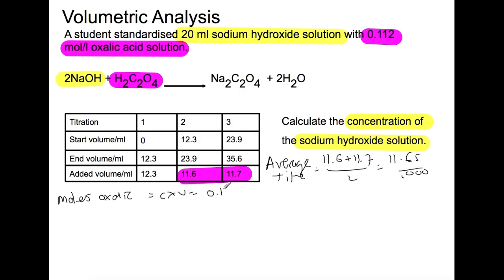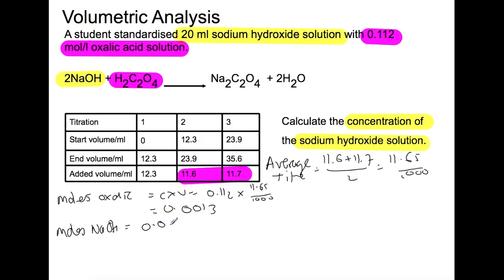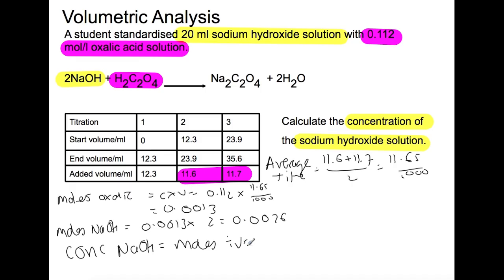The moles of oxalic acid used in this titration is 0.0013. There is a two-to-one relationship between sodium hydroxide and oxalic acid, so the moles of sodium hydroxide will be double that of oxalic acid. To work out the concentration of sodium hydroxide, we rearrange the equation: moles divided by volume. The moles have just been calculated and the volume from the question is 20 mL, so we divide by 1000. The concentration is 0.13 mol per litre.